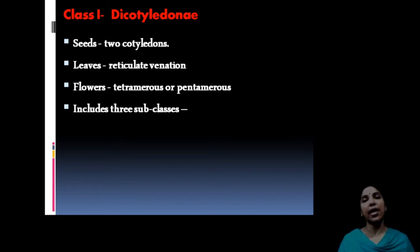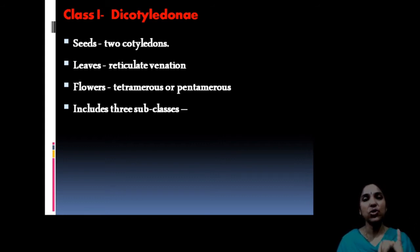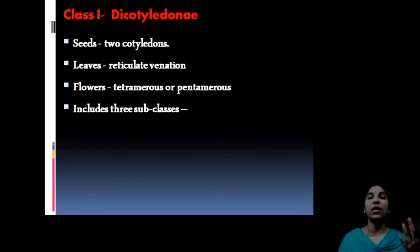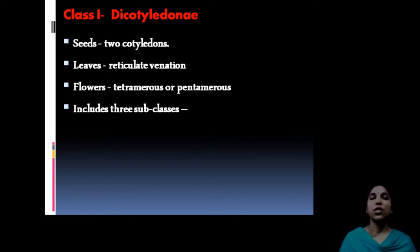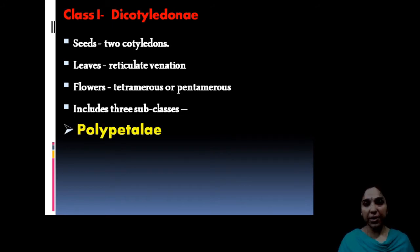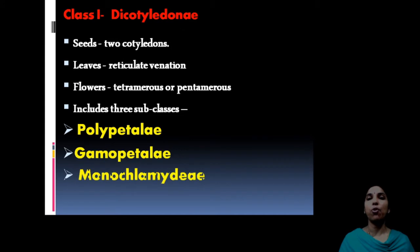The first class is dicotyledons. Their characteristic features are two cotyledons and reticulated venation. They have pentamerous or tetramerous flowers — for example, hibiscus has typical five-part characters. Class 1, dicotyledons, includes three subclasses: Polypetalae, Gamopetalae, and Monochlamydeae.